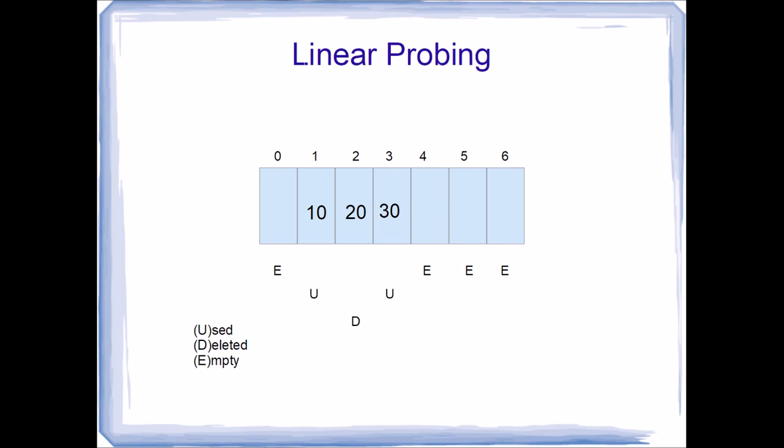Now let's remove 10. The hash function returns a hash index of 1, so we look in element 1. We notice it is marked as used and contains the value we want to remove. To remove it, we mark that element as deleted.